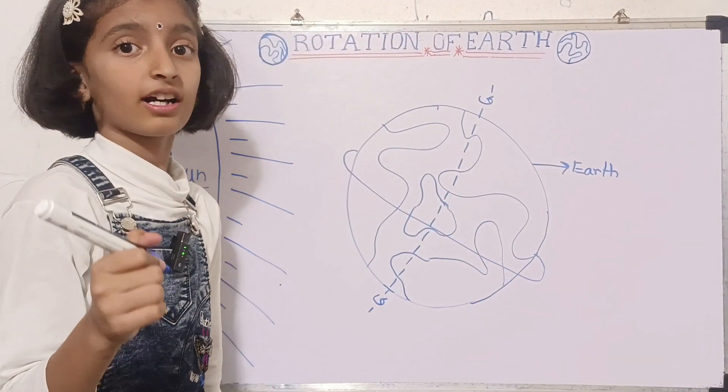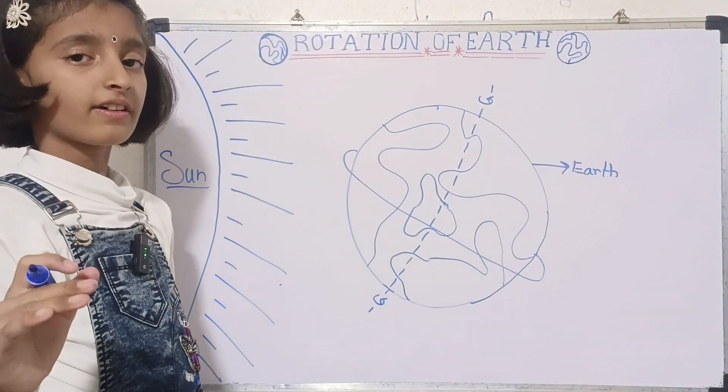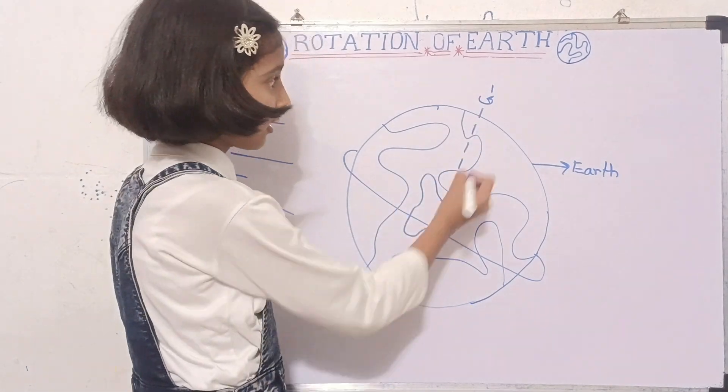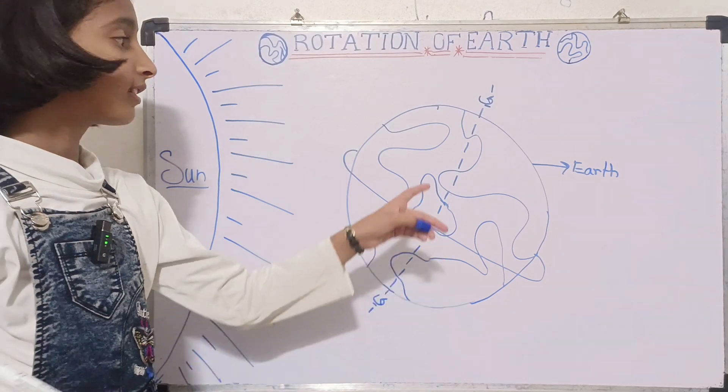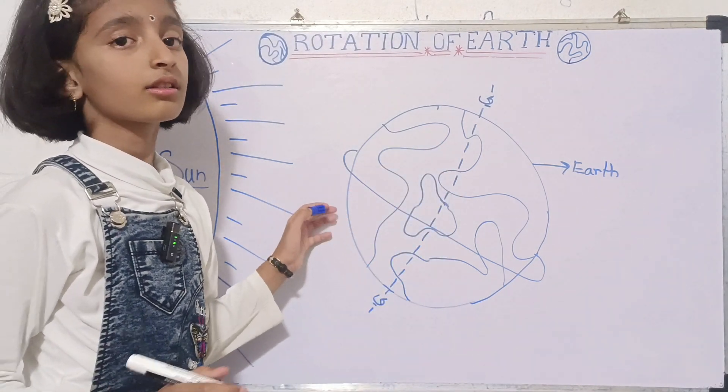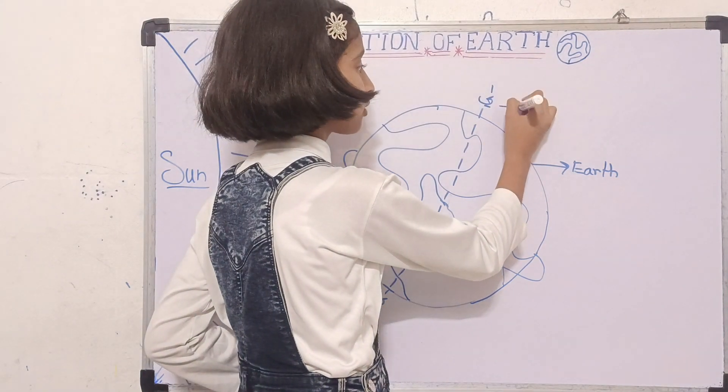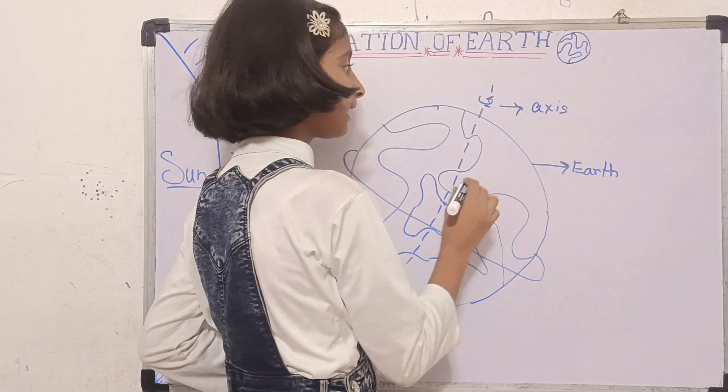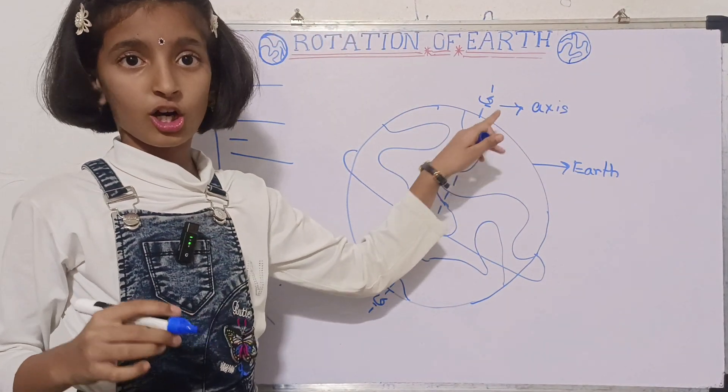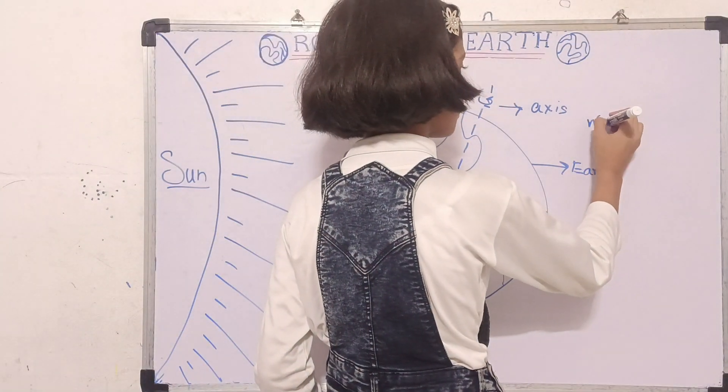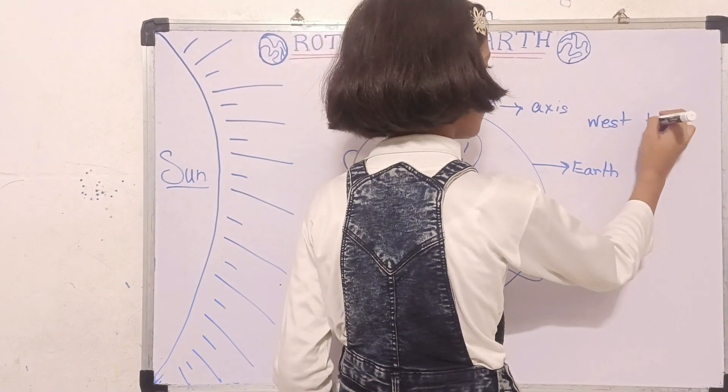I know what you are wondering about. What is this line and what are these two arrows? This line is an imaginary line on which the Earth rotates. This line is called the axis, and these arrows show the movement of Earth from west to east.